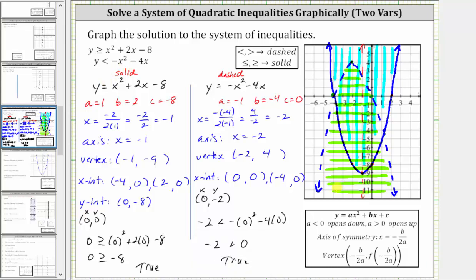The solution to the system is the double-shaded region bounded by the two parabolas. Any point in this region — including points on the solid graph, but not on the dashed graph — satisfies the system of quadratic inequalities and represents the solution. I hope you found this helpful.